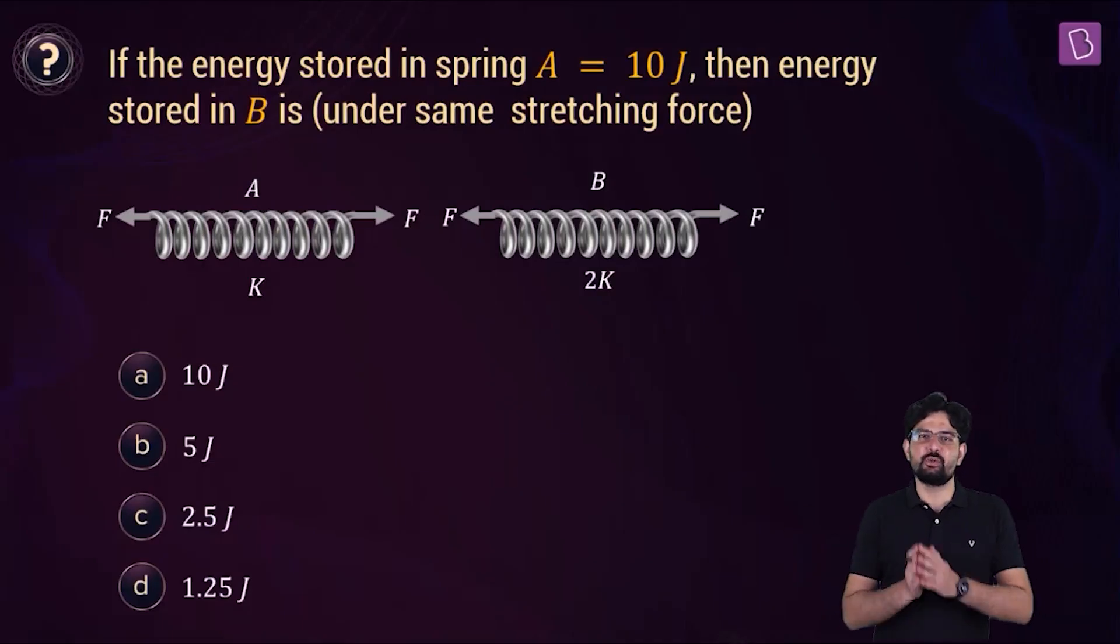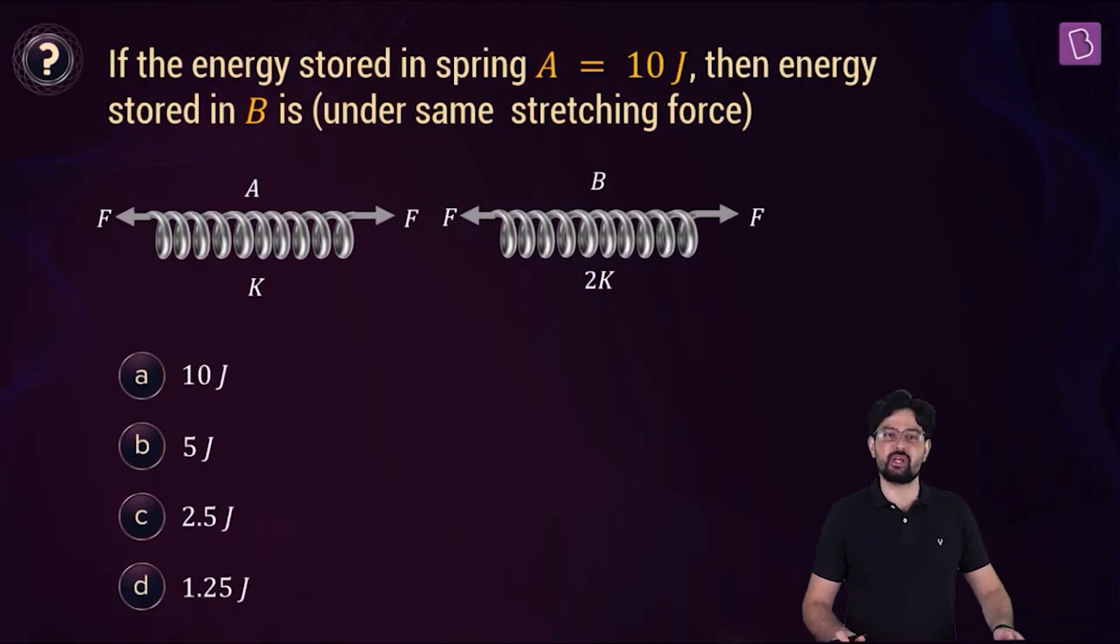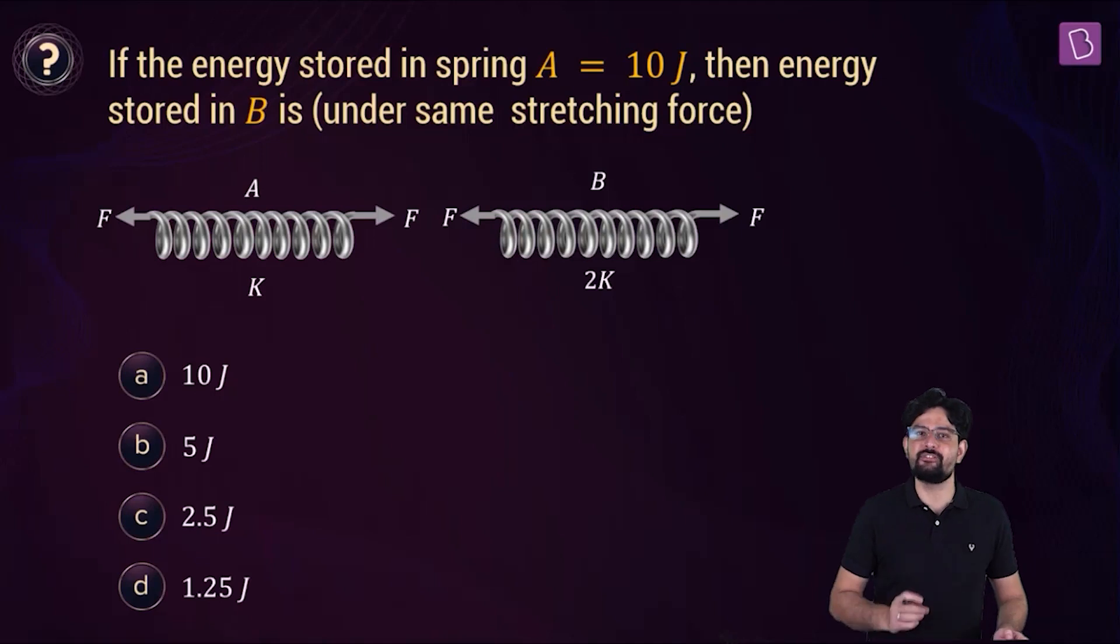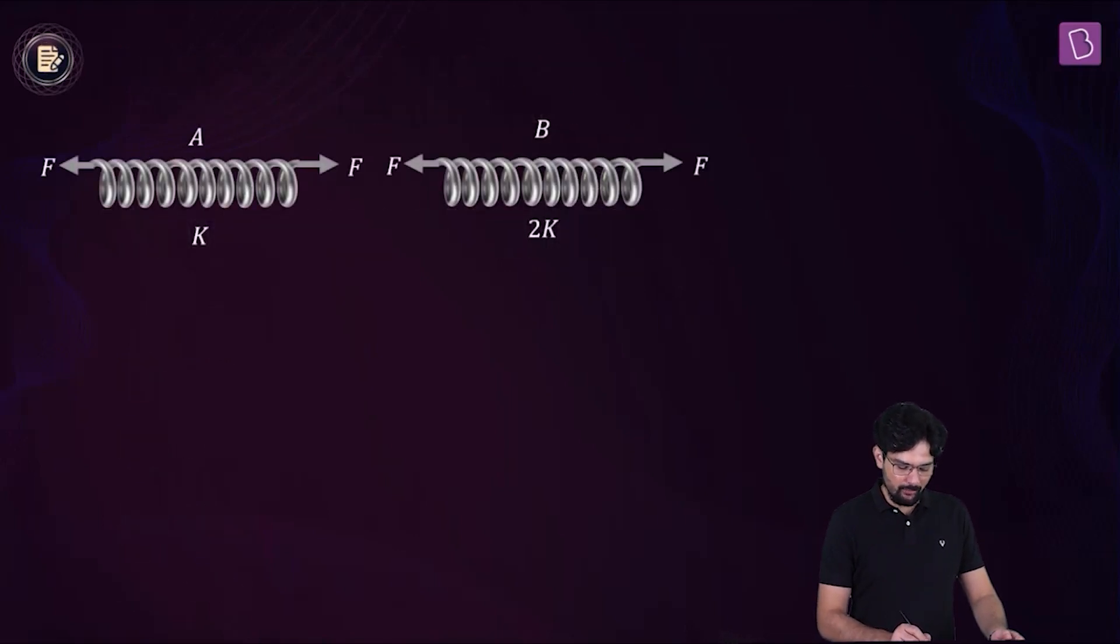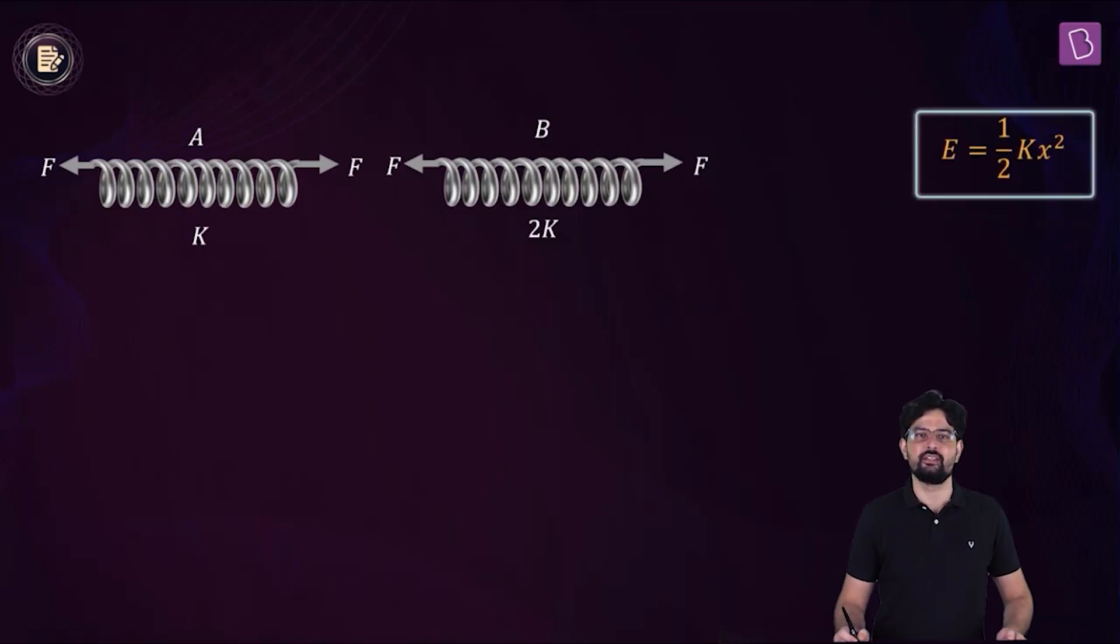As you can see, two springs A and B are under the same stretching force. The stiffness of spring A is K and the stiffness of spring B is 2K. Given that the energy stored in the spring A is 10 joules, you have to find out how much energy is stored in spring B. Simple, right? So we know that the energy stored is in the form of elastic potential energy. And in the case of the springs, that is half K X square.